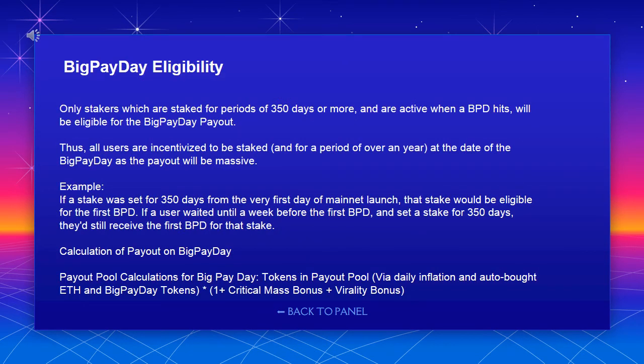Big Payday eligibility: only stakers who are staked for periods of 350 days or more and are active when a Big Payday hits will be eligible for the Big Payday payout. All users are incentivized to be staked for over a year. For example, if a stake was set for 350 days from the very first day of mainnet launch, that stake would be eligible for the first BPD. Even a user who waited until a week before the first BPD and set a 350-day stake would still receive the first BPD.